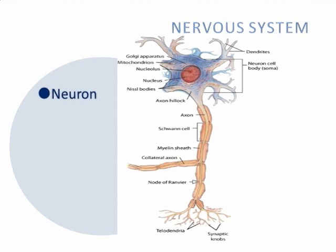One of the most important aspects of the nervous system is the neuron. The neuron generates the nerve impulse, or excitability, and it transmits the impulse to other portions of the cell, which is conductivity. It has the ability to influence other neurons, muscle cells, or glandular cells by transmitting the nerve impulse to them.